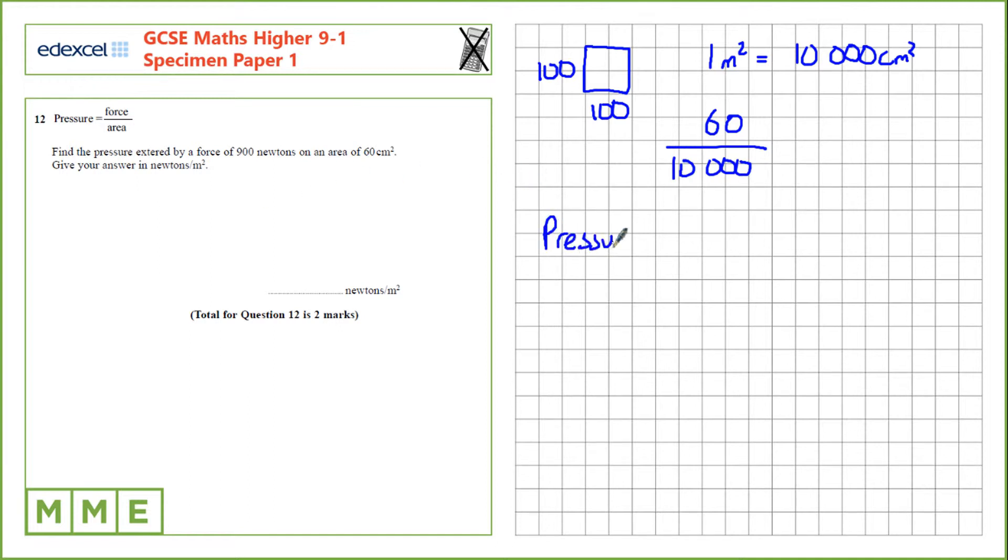So pressure is the force, 900, divided by the area. I'm going to write that as a fraction of 60 over 10,000.